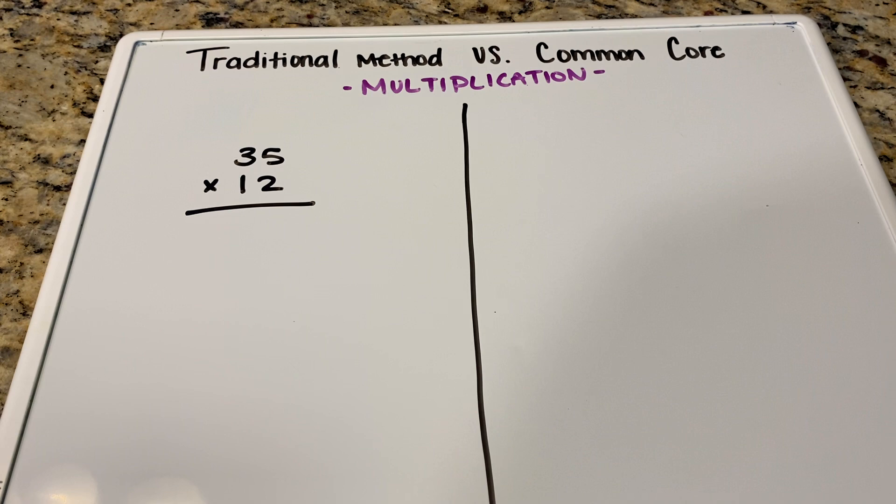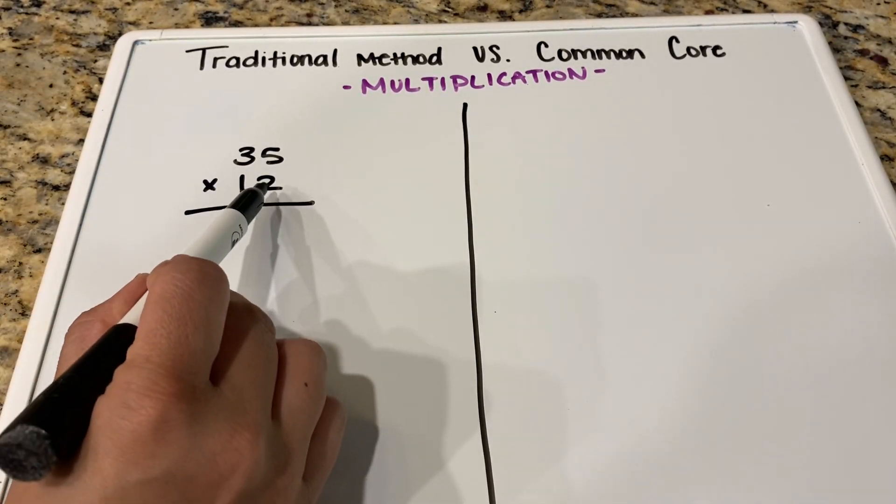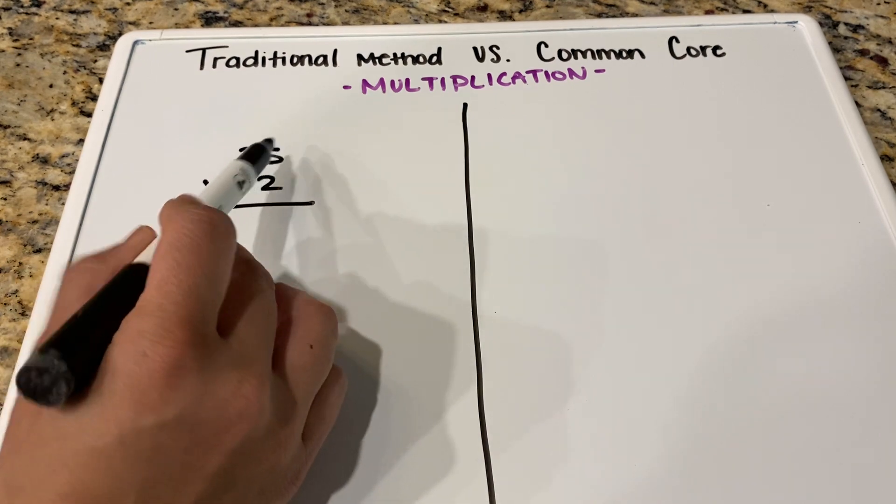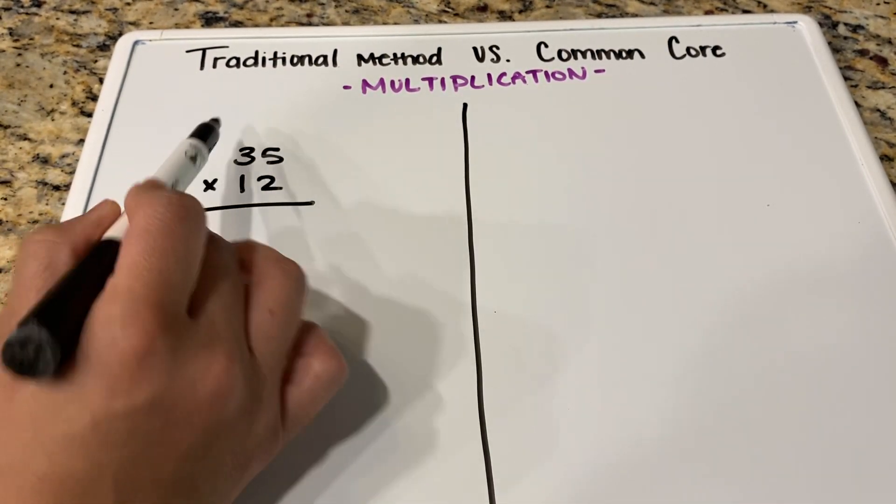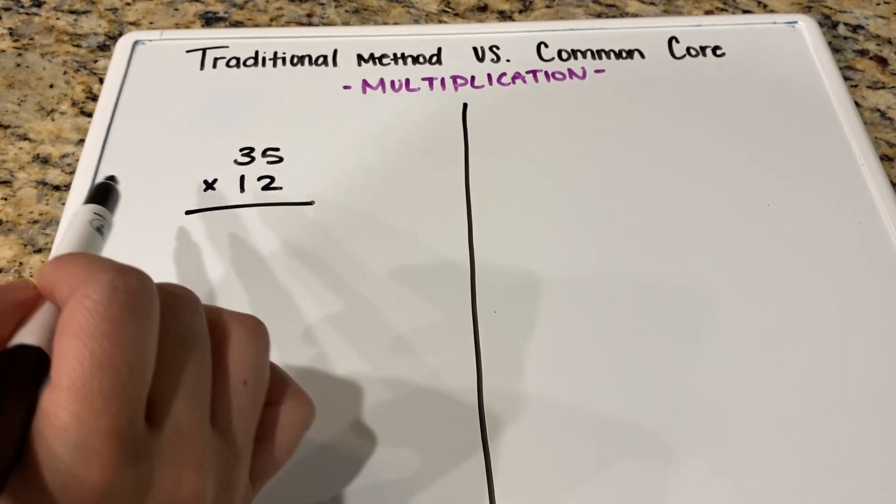All right. So in the traditional method, how we do it is we actually just start with our ones, multiply it from right to left, and then we'll go from our tens and multiply with our ones and our tens. So let's go ahead and do that.